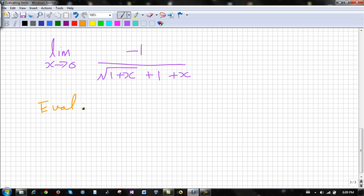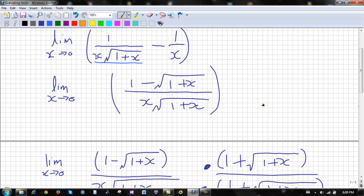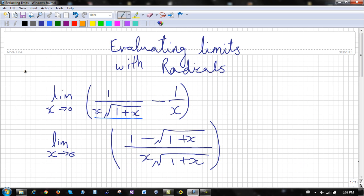So basically we would substitute x in with 0. Now that means we would get negative 1, all divided by square root of 1 plus 0, which is just 1, plus 1, and then plus 0. This would give us negative 1, square root of 1 plus 1 is 2, so this would give us negative 1 over 2. So that's our answer for this limit over here.